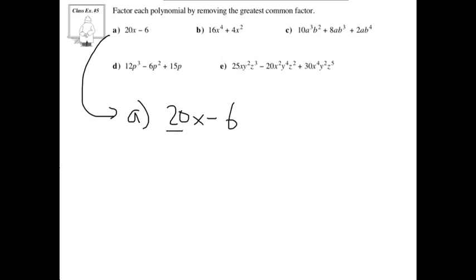Taking a look at the coefficients, the greatest common factor of 20 and 6 would be 2. And if you notice, only one of these contains an x, so that's the only thing we're going to pull out. That means 20x divided by 2 is going to be 10x, and negative 6 divided by 2 is going to be negative 3.